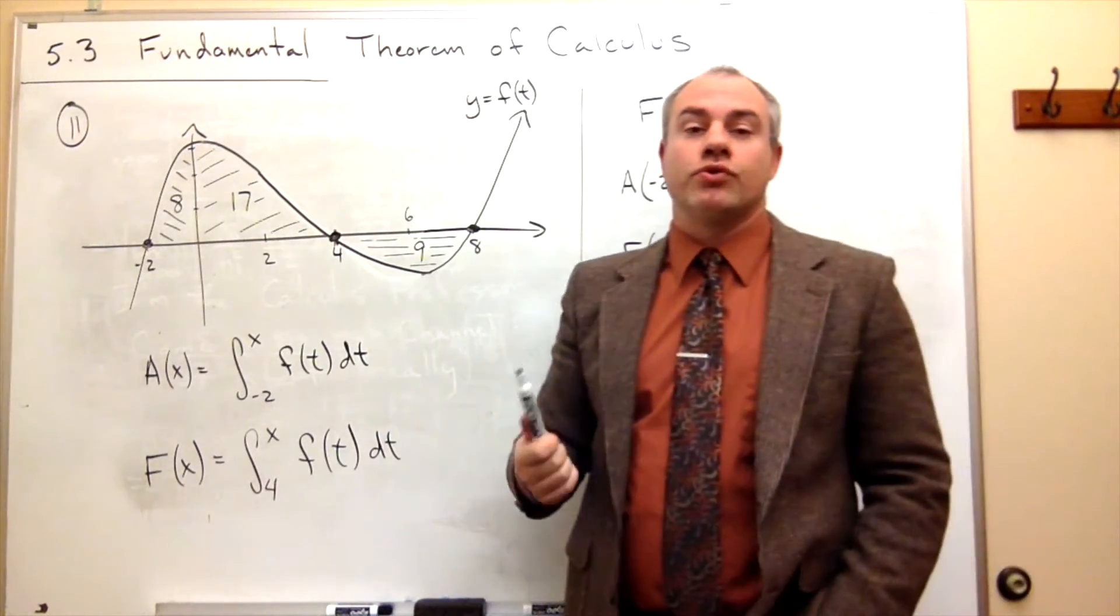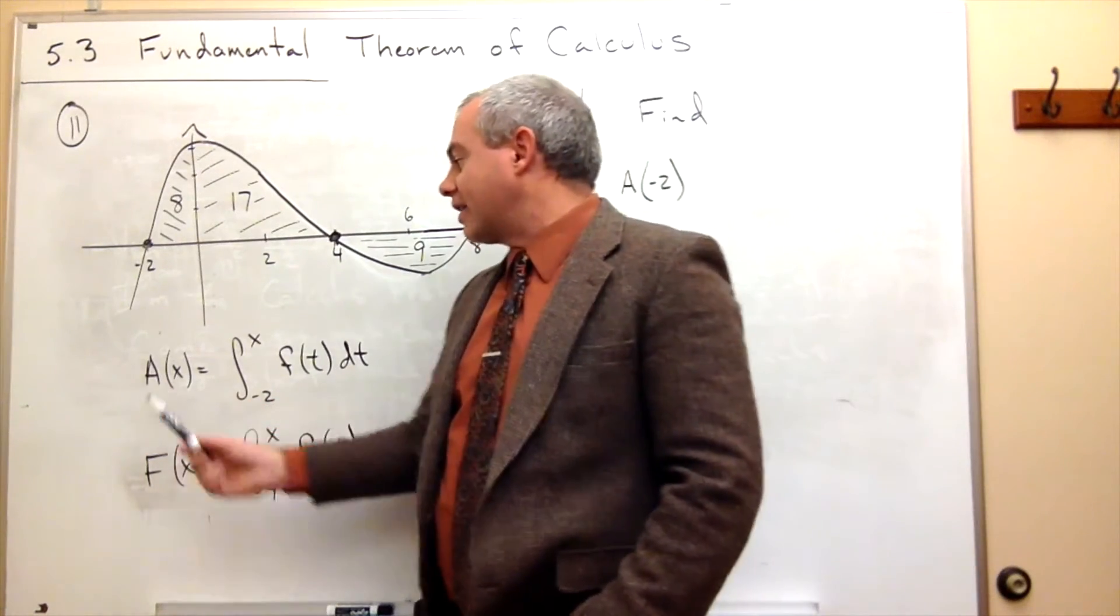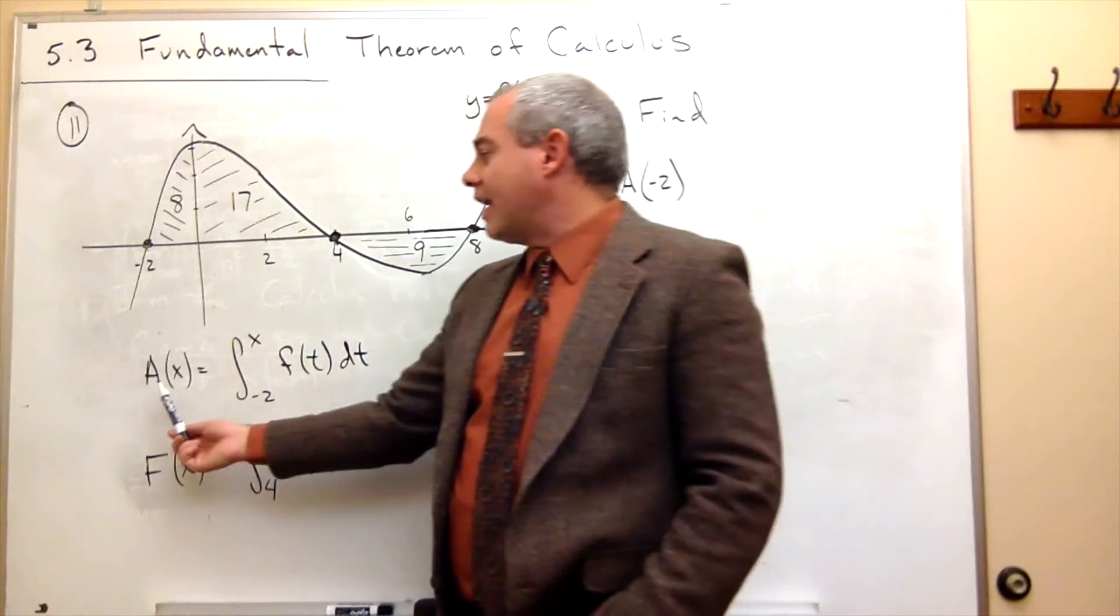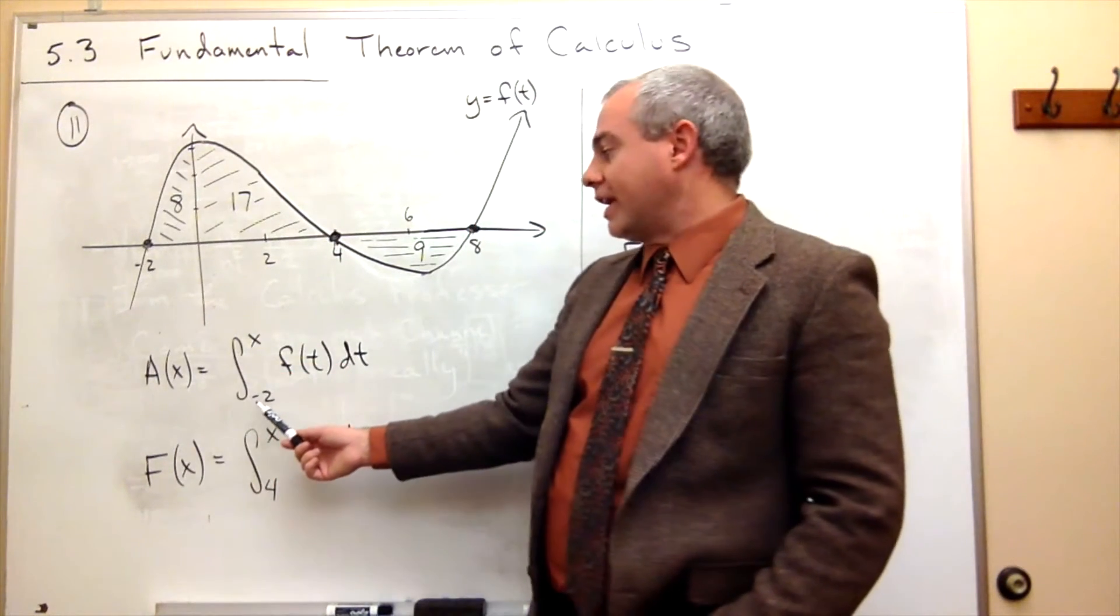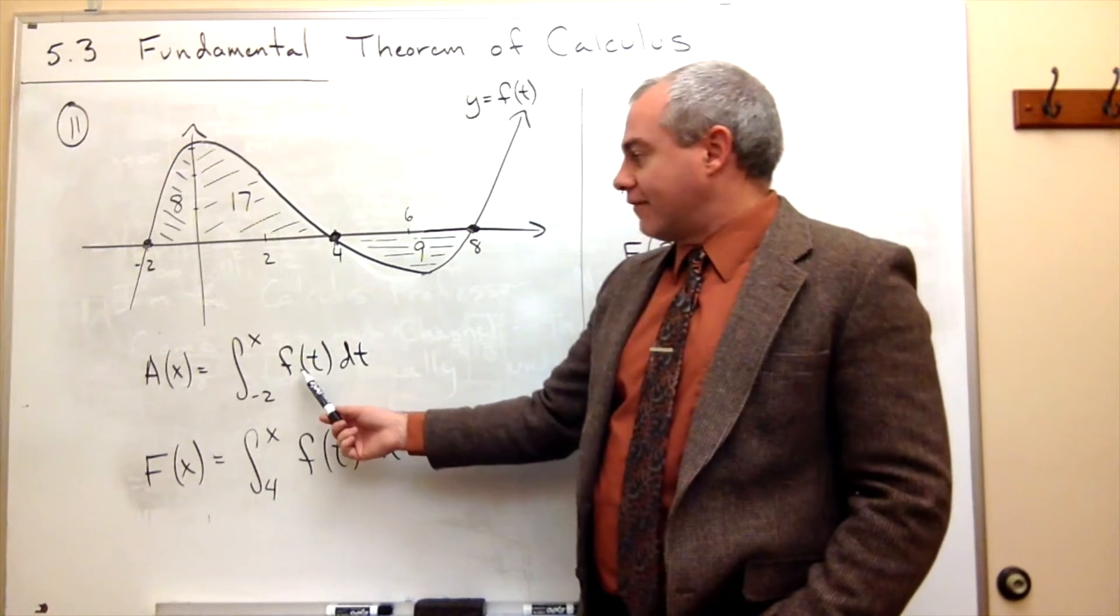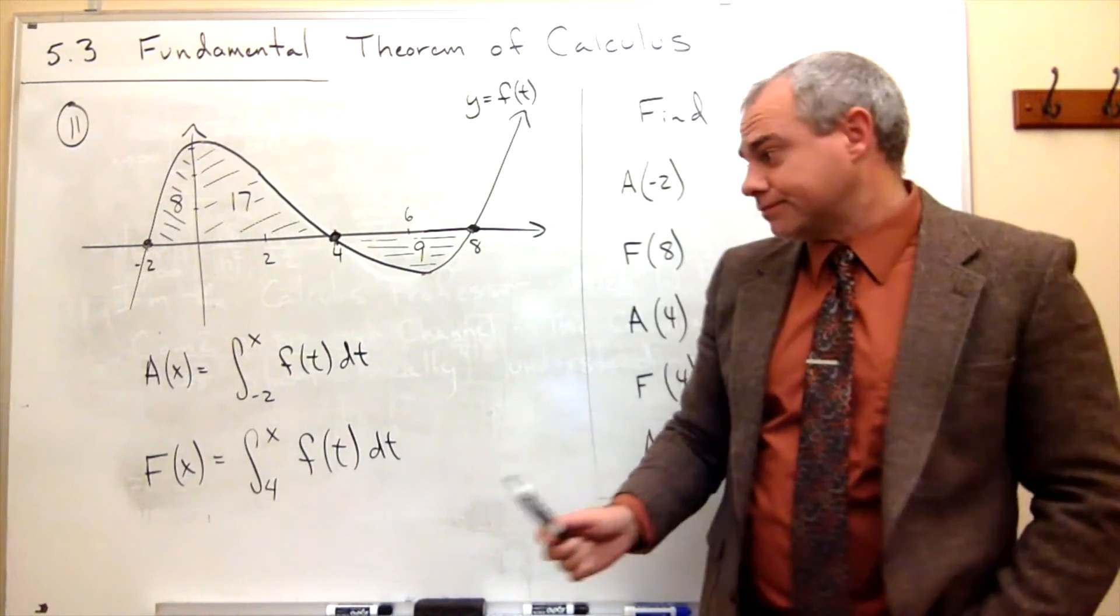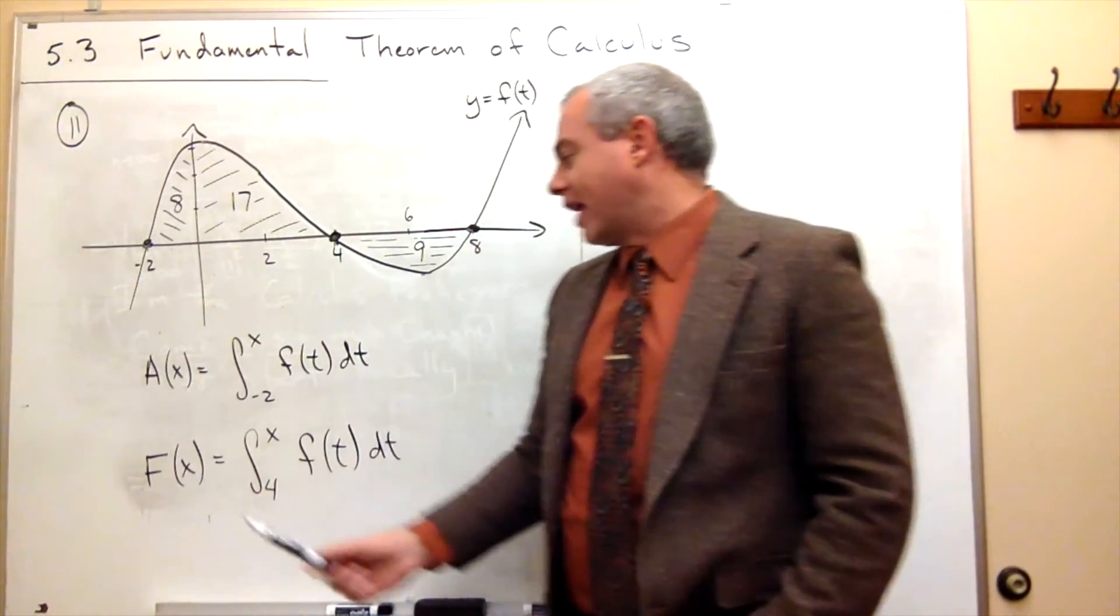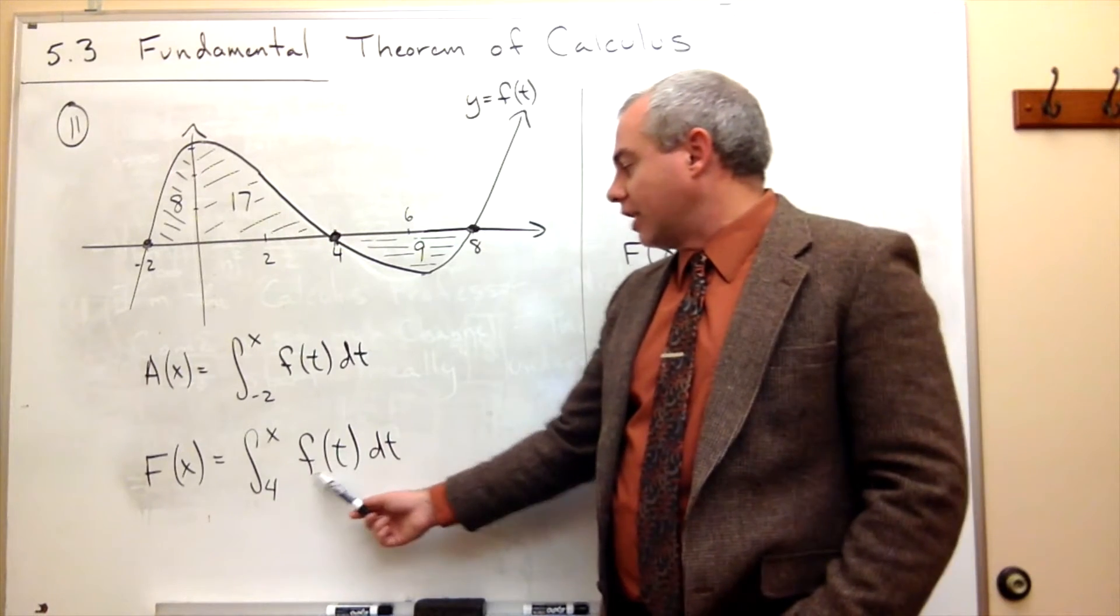Then we're given two functions. We have the function A of x. And A of x represents the value that I get when I integrate from negative two to x of this function f of t dt. Capital F of x is the integral from four to x of little f of t dt.